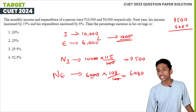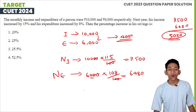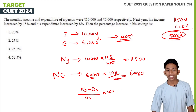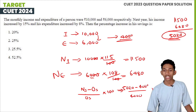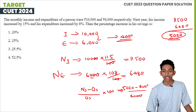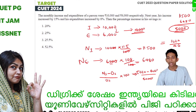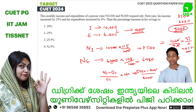Old savings = 10,000 − 6,000 = Rs. 4,000. New savings = 11,500 − 6,480 = Rs. 5,020. Percentage increase in savings = (new savings − old savings) / old savings × 100 = (5,020 − 4,000) / 4,000 × 100 = 1,020/4,000 × 100 = 25.5%. The answer is option C.